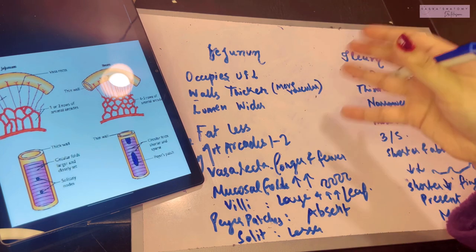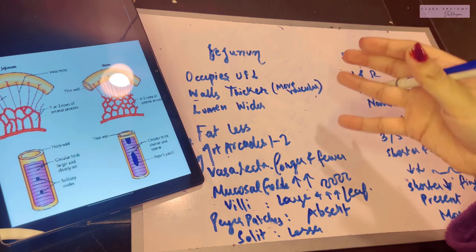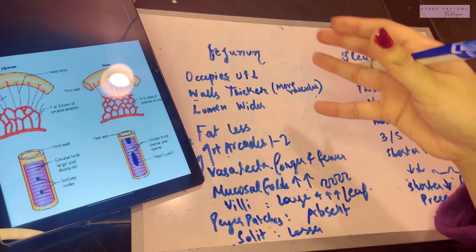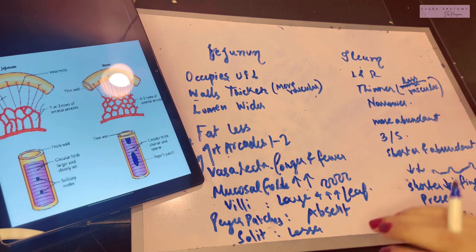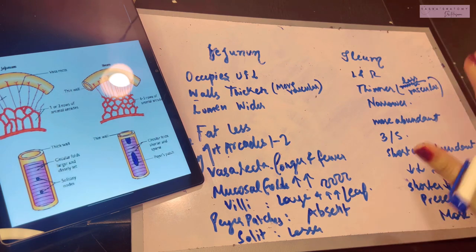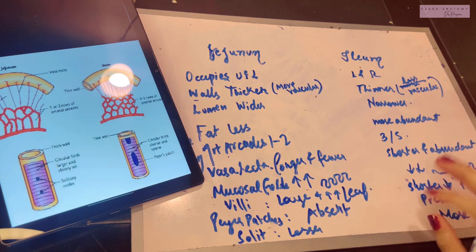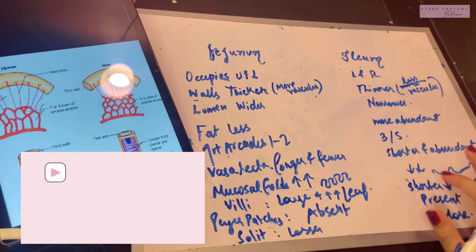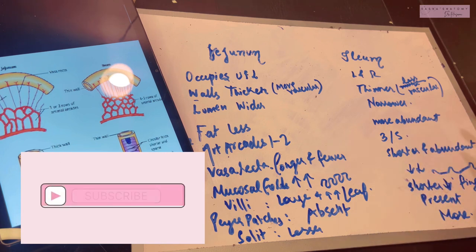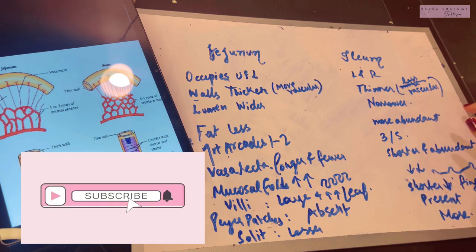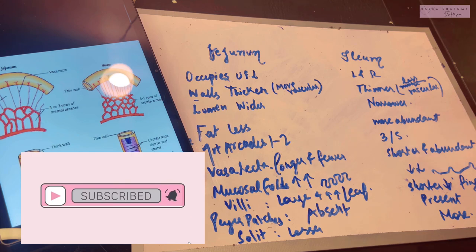So those were the major differences between the jejunum and ileum, formed on the basis of their respective functions. That was all you needed to know about the small intestine. I really hope you understood the video and the comparison, as this is a very important examination question. Please subscribe to my channel if you haven't yet, and thank you so much for watching.